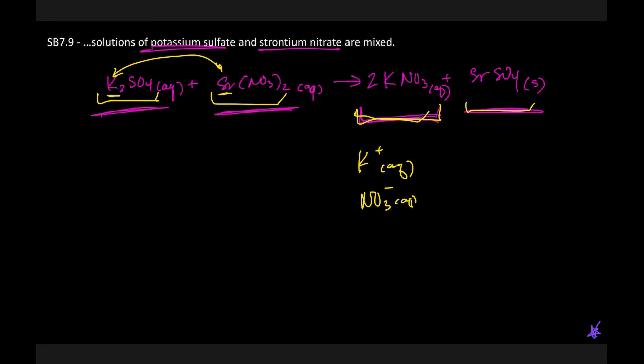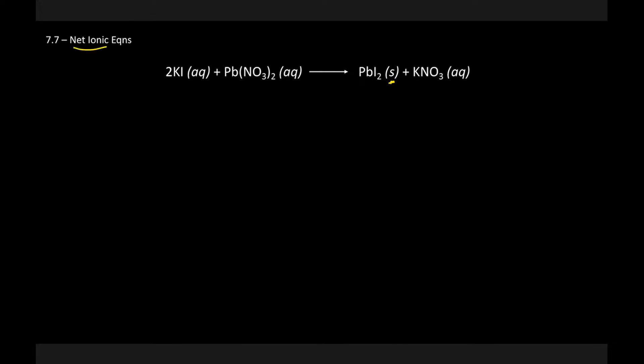A net ionic is just something that allows us to better describe what happens in a precipitation reaction, or any reaction actually. When we think about what net means, net is like your net savings or your net paycheck for those of you that have jobs. That's the amount that you get at the end after everything else is taken into account. So let's go ahead and we'll run through this one as a practice.